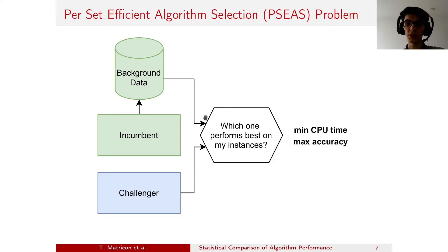We have two objectives. We want to minimize the cost — that is, minimize the CPU time used to answer this question. And we want to maximize the accuracy, that is the accuracy of the prediction of which of the two algorithms is the best on our full set of instances.